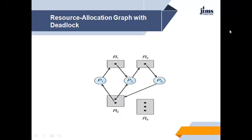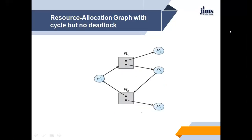Now consider a resource allocation graph which has a cycle but no deadlock. The cycle is P1 → R1 → P3 → R2 → P1; however, there is no deadlock. Observe that process P1 may release its instance of resource type R2, which can then be allocated to P3, breaking the cycle. So if a resource allocation graph does not have a cycle, the system is not in a deadlock state. On the other hand, if there is a cycle, the system may or may not be in a deadlock state. This observation is important when dealing with the deadlock problem.